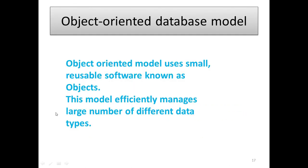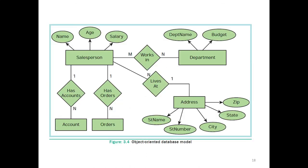And then, object-oriented database model. Object means object-oriented model uses small reusable software data. Object means thing. This model efficiently manages large number of different data types. For example, object-oriented database model. You see, salesman, salesman name, age, salary, has account, has order, account and order, like this.